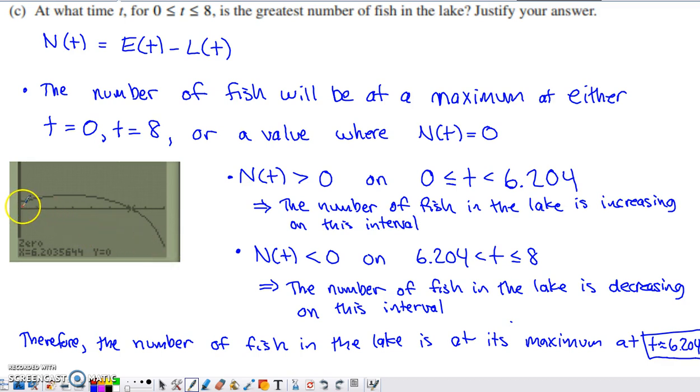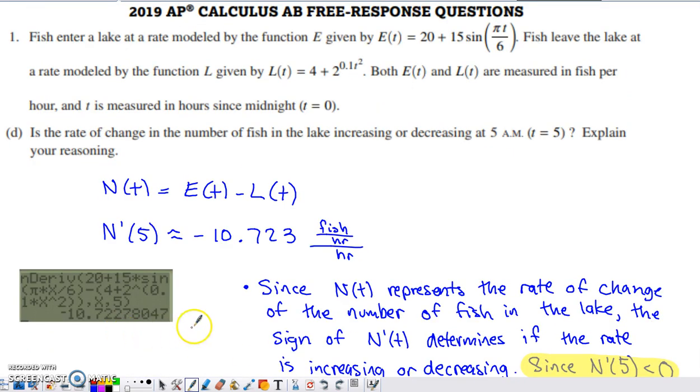So if I have the number of fish increasing from time zero to 6.204, and then I have the number of fish decreasing from 6.204 the rest of the way to time eight, that must mean the maximum number of fish in the lake happens at time 6.204.